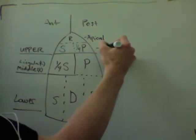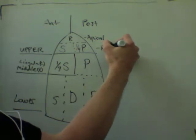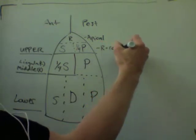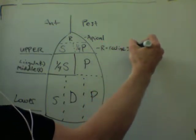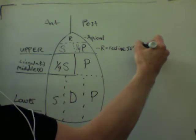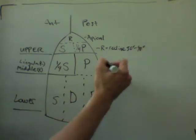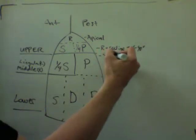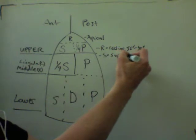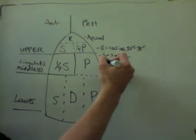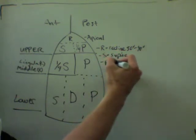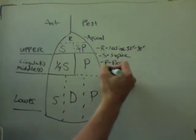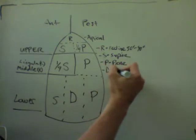We'll do sidelying for the lateral basal segment of the lower lobe. So the key is: R is reclined 30 to 40 degrees, S is supine, P is prone, and the equal sign means sidelying.